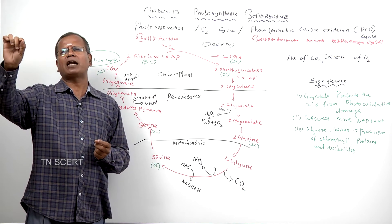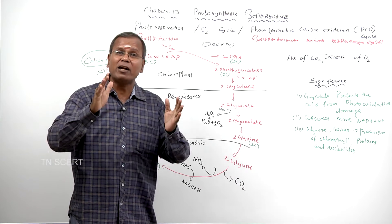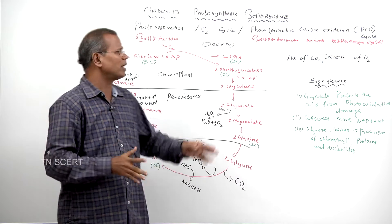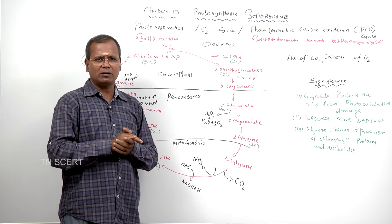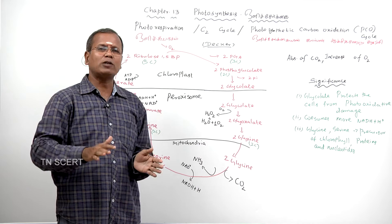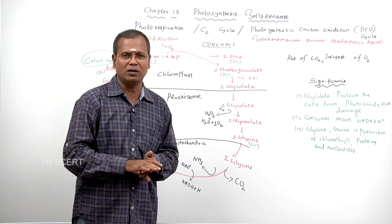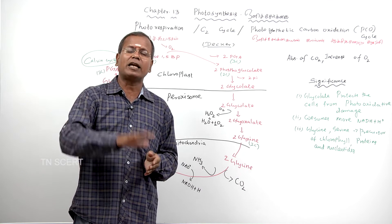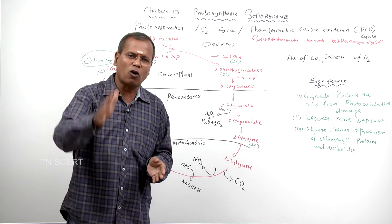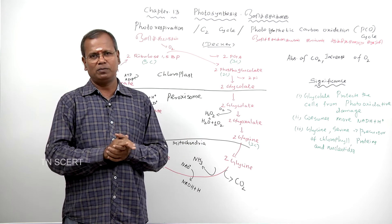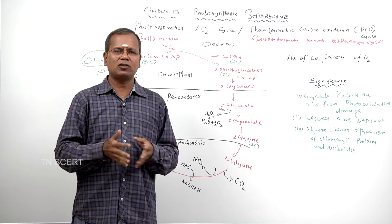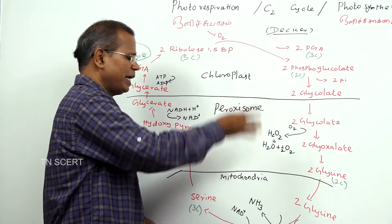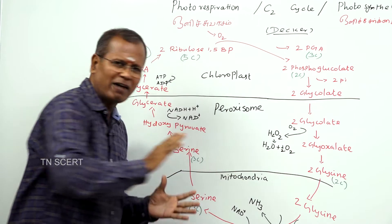So, respiration in the presence of sunlight, or light-dependent respiration, is said to be photorespiration. This respiration takes place only in photosynthetic cells, or cells with chloroplasts. The cell organelles participating are chloroplast, peroxisome, and mitochondria.